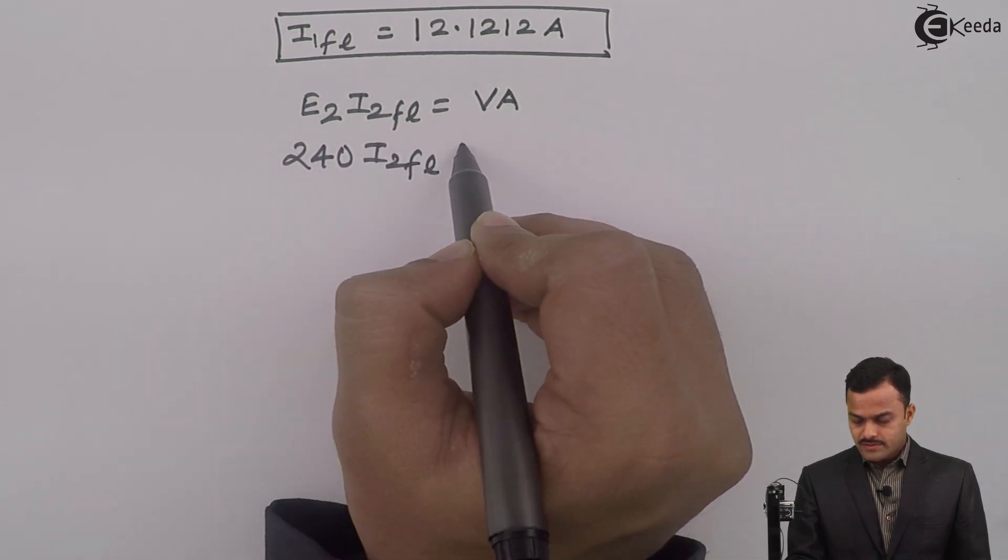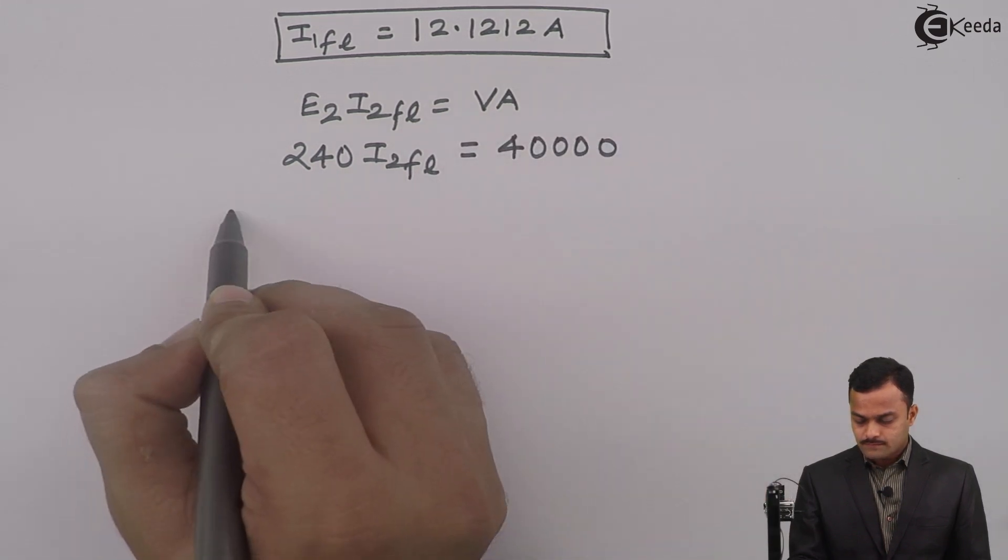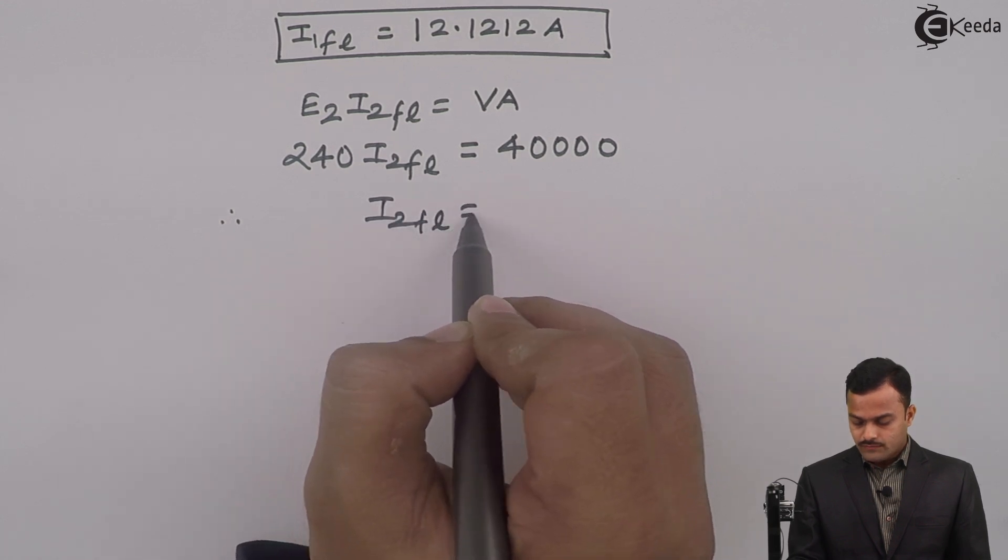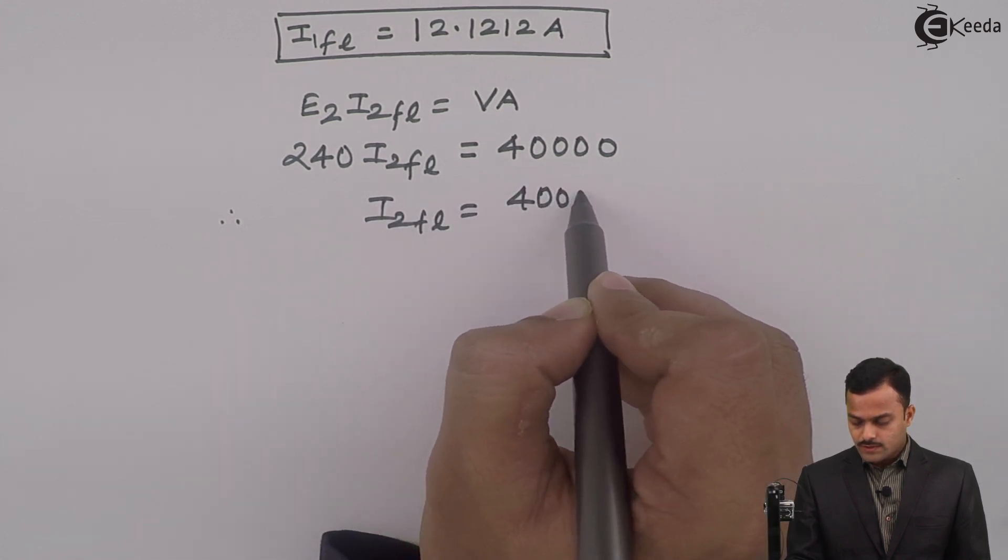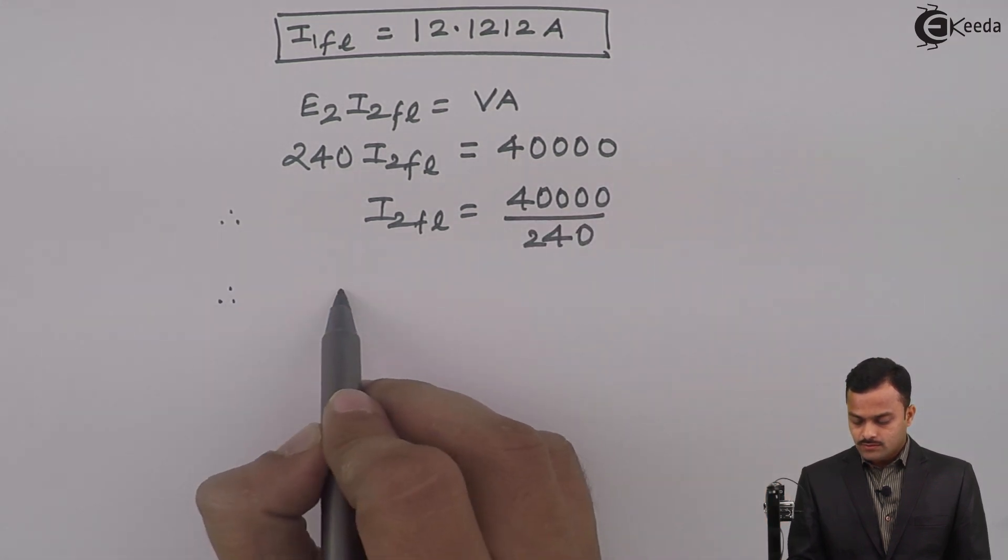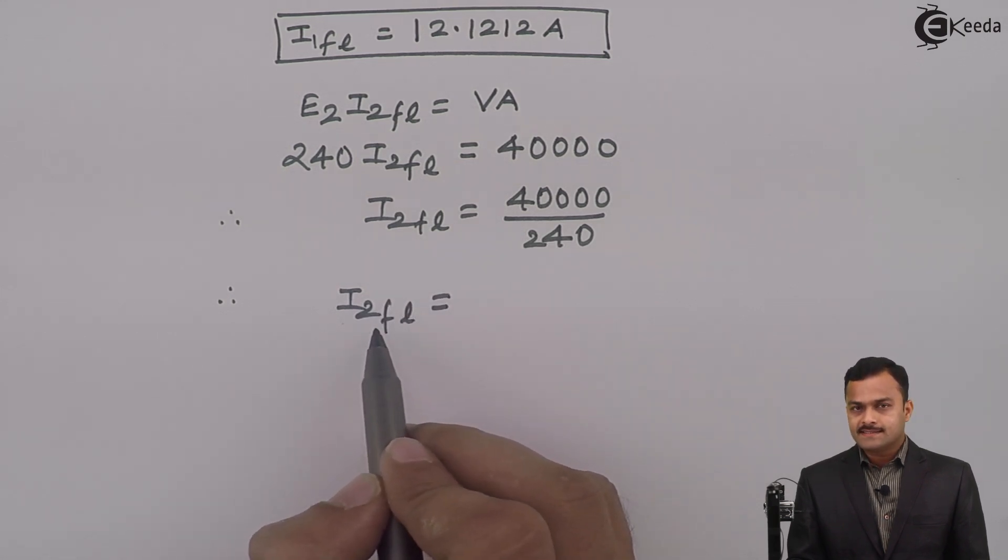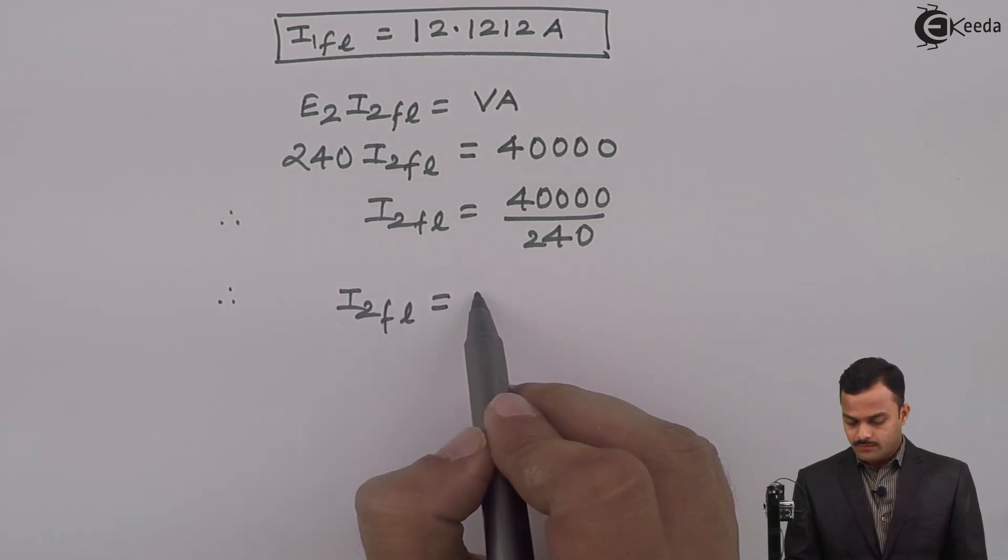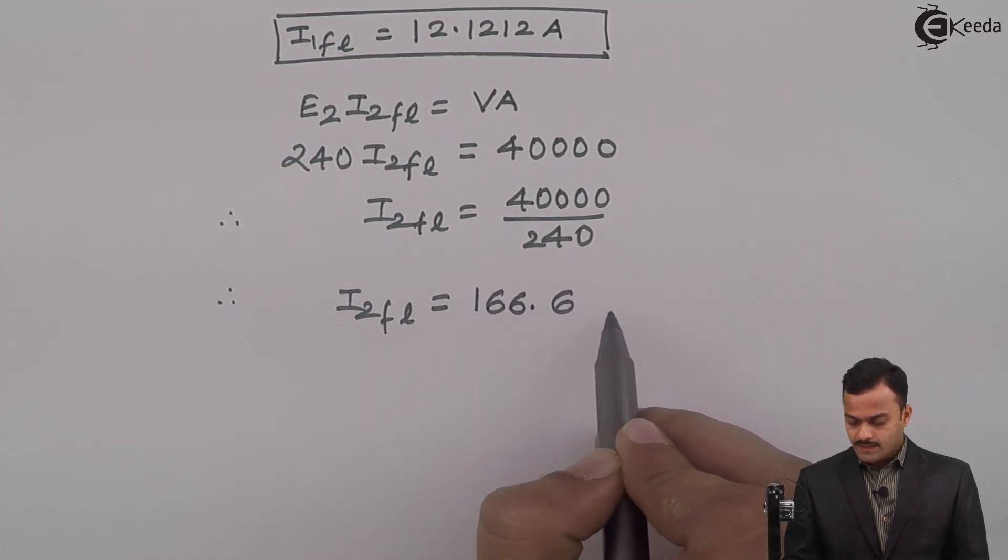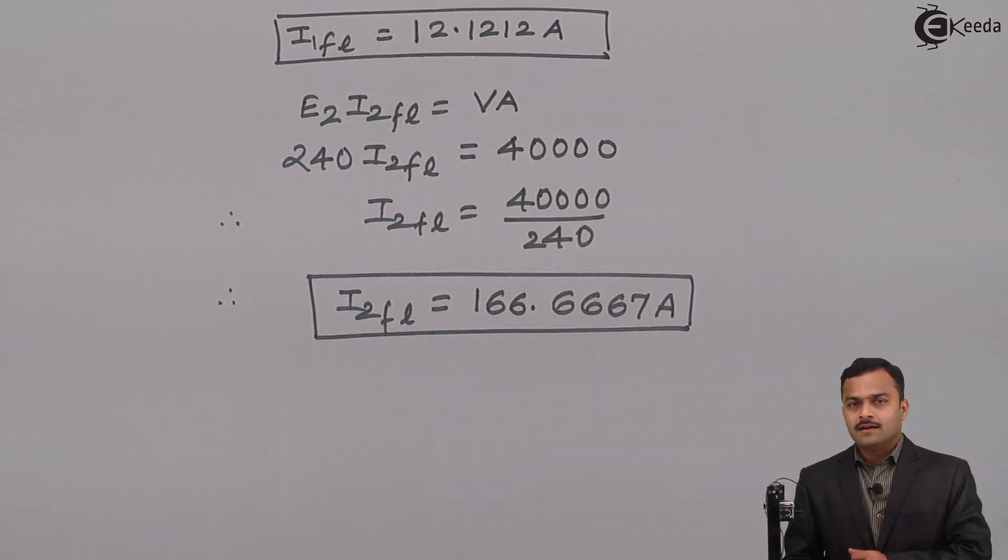I2 FL we are supposed to calculate and VA is 40,000. So I2 FL equal to 40,000 divided by 240. So I2 FL which is nothing but secondary side full load current will be equal to 166.6667 ampere, which is the required answer. Thank you.